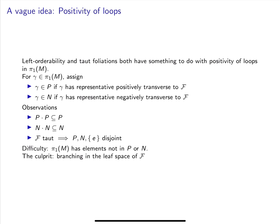We've defined left orderability and taut foliations, and now I'd like to make a preliminary connection between them. The vague idea is that they both have something to do with positivity of loops in π₁(M). So given a taut foliation, let's try to construct a left order of π₁. We need to assign elements of π₁ to either the positive or the negative cone, and one natural thing to try is to assign loops which are positively transverse to F to be in the positive cone, and loops which are negatively transverse to F to be in the negative cone.